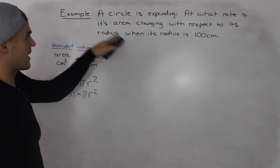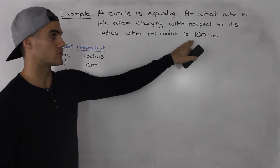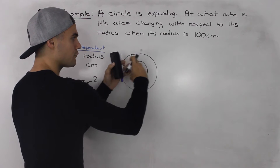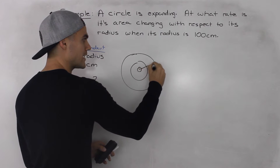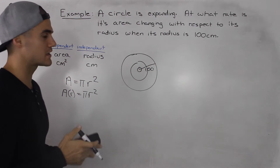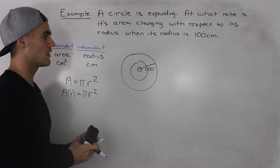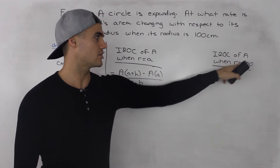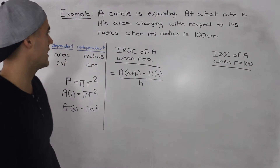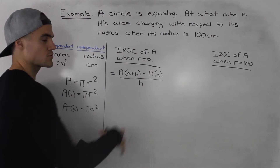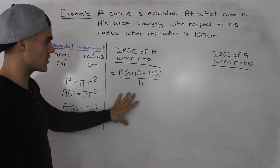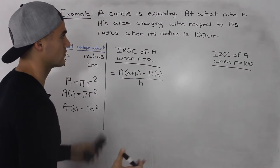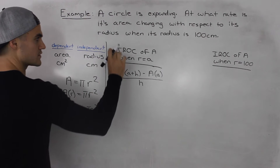Now let's read the question: at what rate is the area changing with respect to its radius when the radius is 100 centimeters? The circle starts small, expands, and they want to know how fast the area is expanding when the radius is 100 centimeters. Because they're looking for a rate of change at a specific point, they're looking for the instantaneous rate of change — the instantaneous rate of change of the area when r equals 100. But first, let's find the instantaneous rate of change when r equals a general value a.